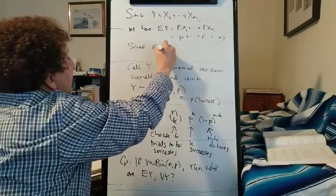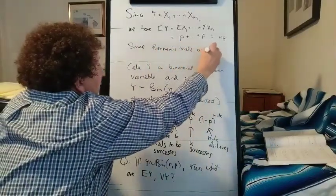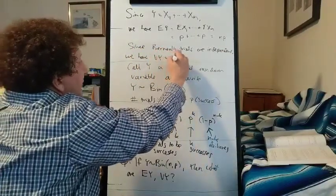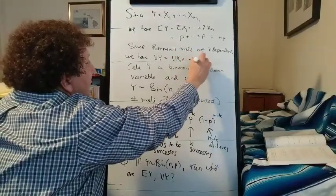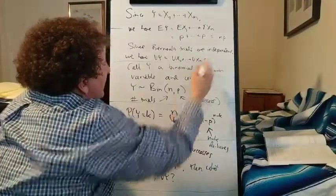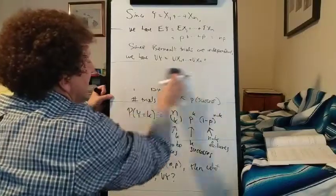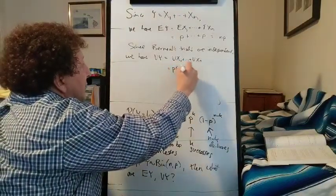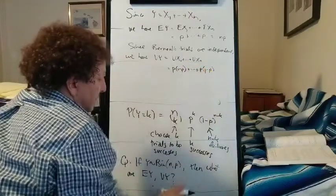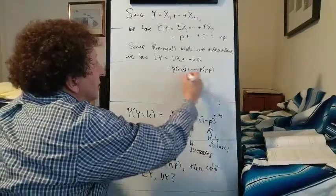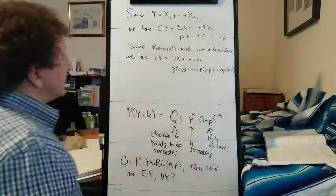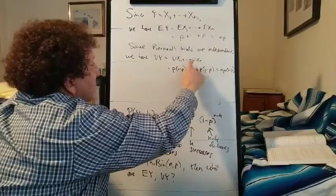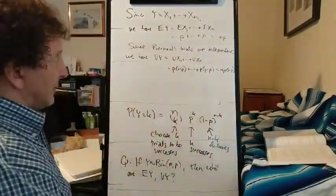Since the Bernoulli trials are independent, we have variance of Y equal to the sum of the variances, which we can do with independent random variables but not in general. The variance for a Bernoulli trial is P times 1 minus P, so we get n of them, giving us n times P times 1 minus P. Both formulas are just n times the variance or expectation of a single Bernoulli random variable.